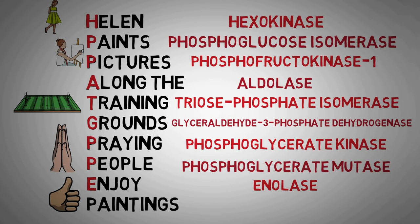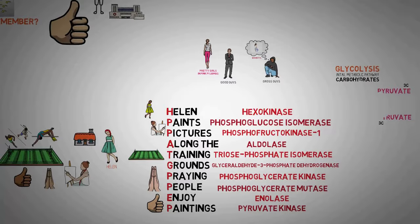The word enjoy in the mnemonic stands for our next enzyme, enolase. Enolase converts 2-phosphoglycerate to phosphoenol pyruvate. The last word in the mnemonic is again a P, which stands for pyruvate kinase. This is the enzyme used in the last step of glycolysis in the conversion of phosphoenol pyruvate to pyruvate.